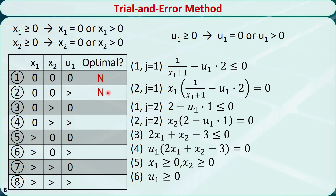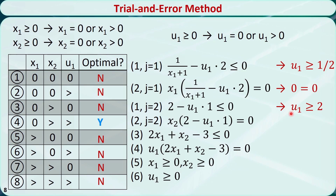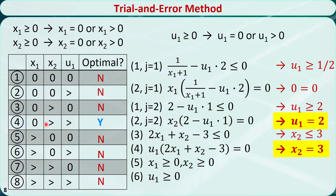We continue to check other combinations. Finally, we find that only combination 4 doesn't lead to a contradiction: x1 equal to 0, and x2 and u1 greater than 0. This condition changes to u1 greater than or equal to 1/2. This condition changes to 0 equal to 0. This condition changes to u1 greater than or equal to 2. This condition changes to u1 equal to 2. This condition changes to x2 less than or equal to 3. This condition changes to x2 equal to 3. So the optimal solution is x1 equal to 0, x2 equal to 3, giving z equal to 6.